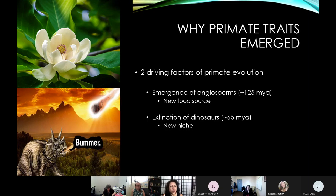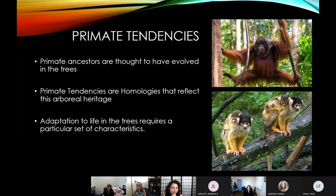That shift allowed organisms living at the time to capitalize on those food sources. And then the extinction of dinosaurs opened up new niches around 65 million years ago for primates to really take over. Because of those factors, primates emerged right around 65 million years ago with a set of characteristics common across the entire order.